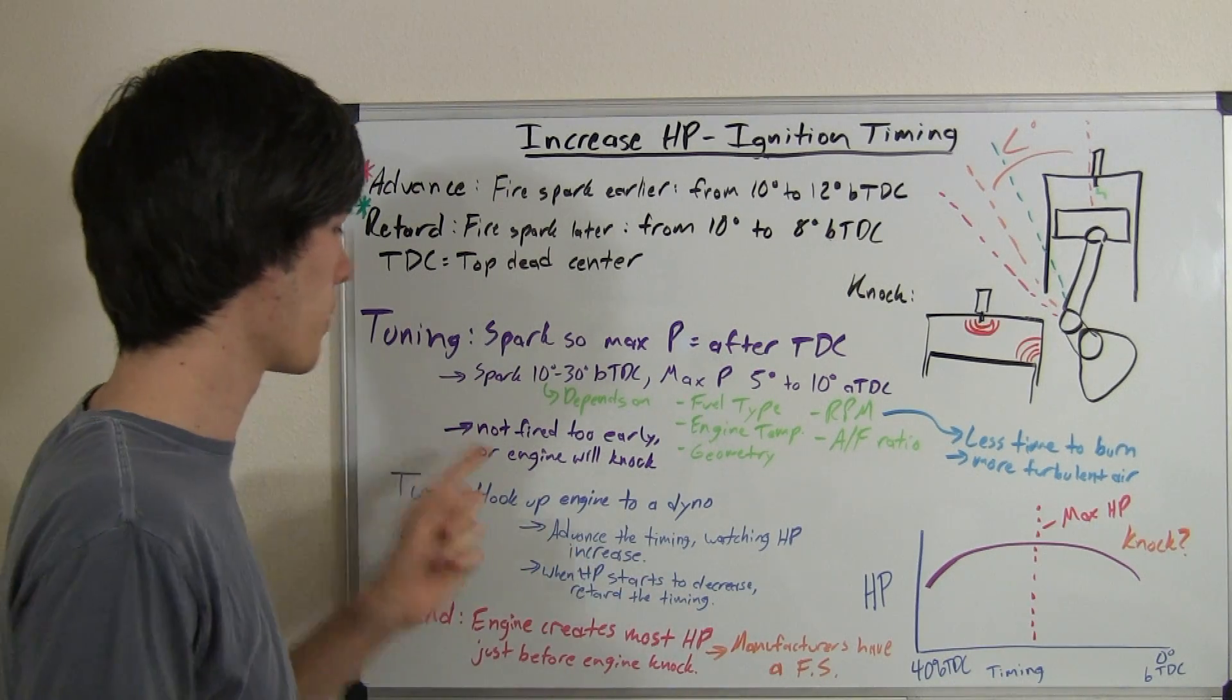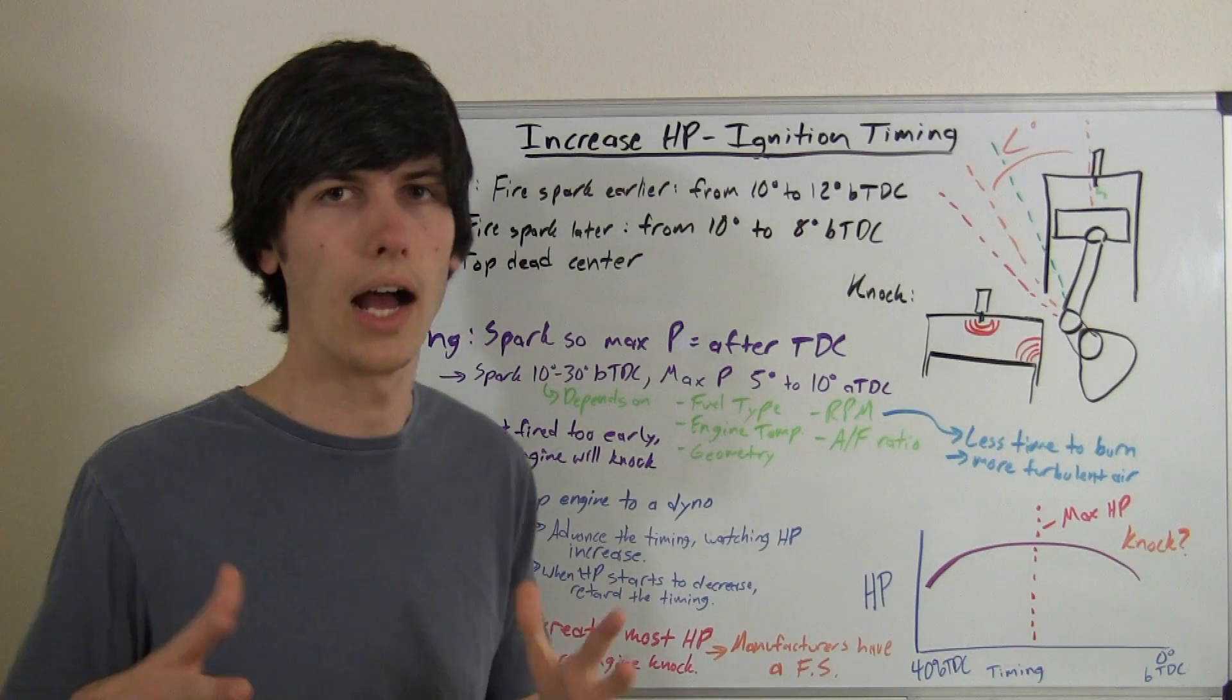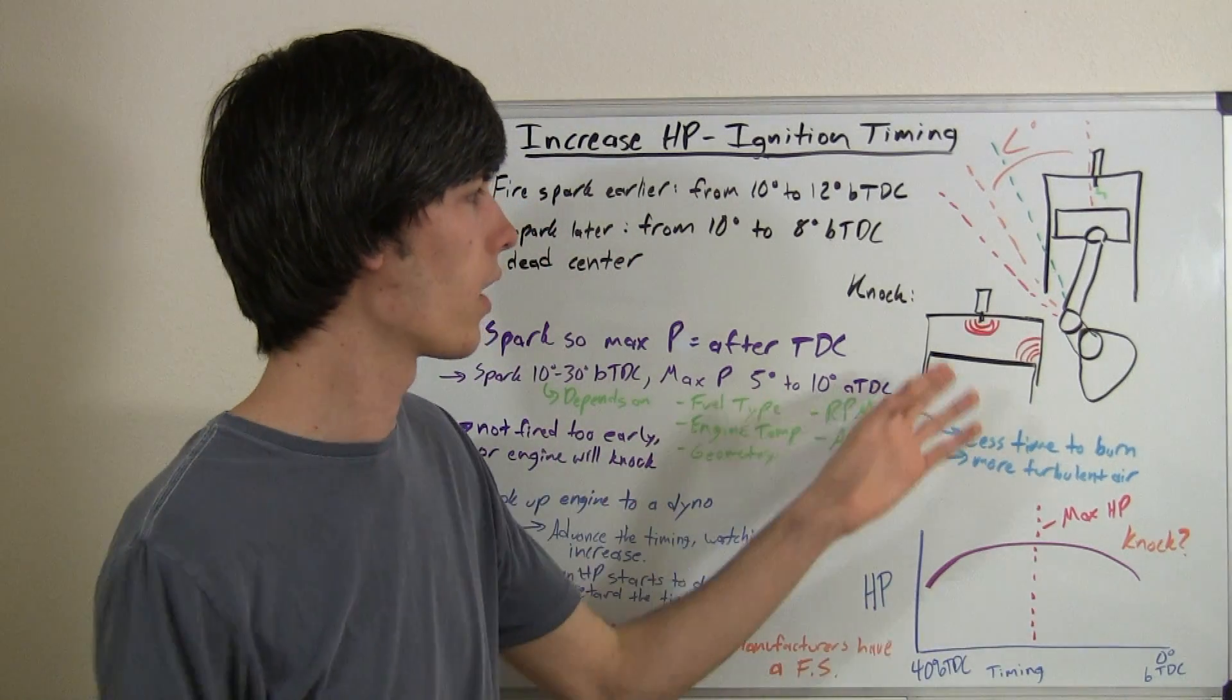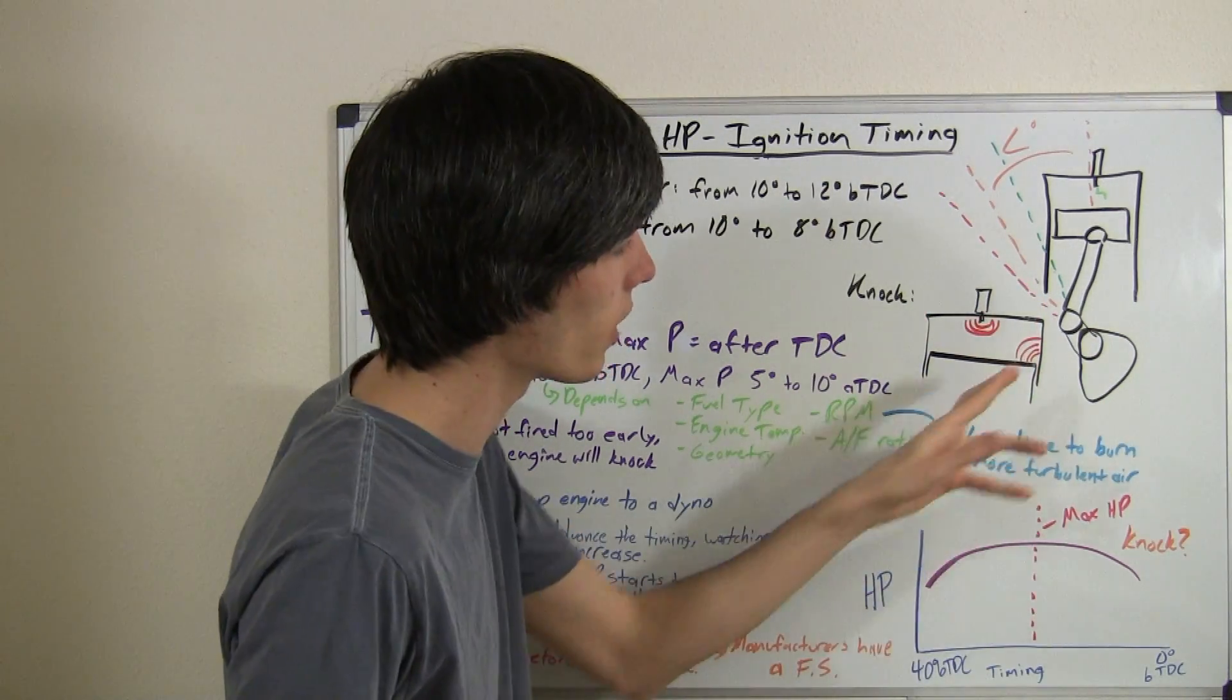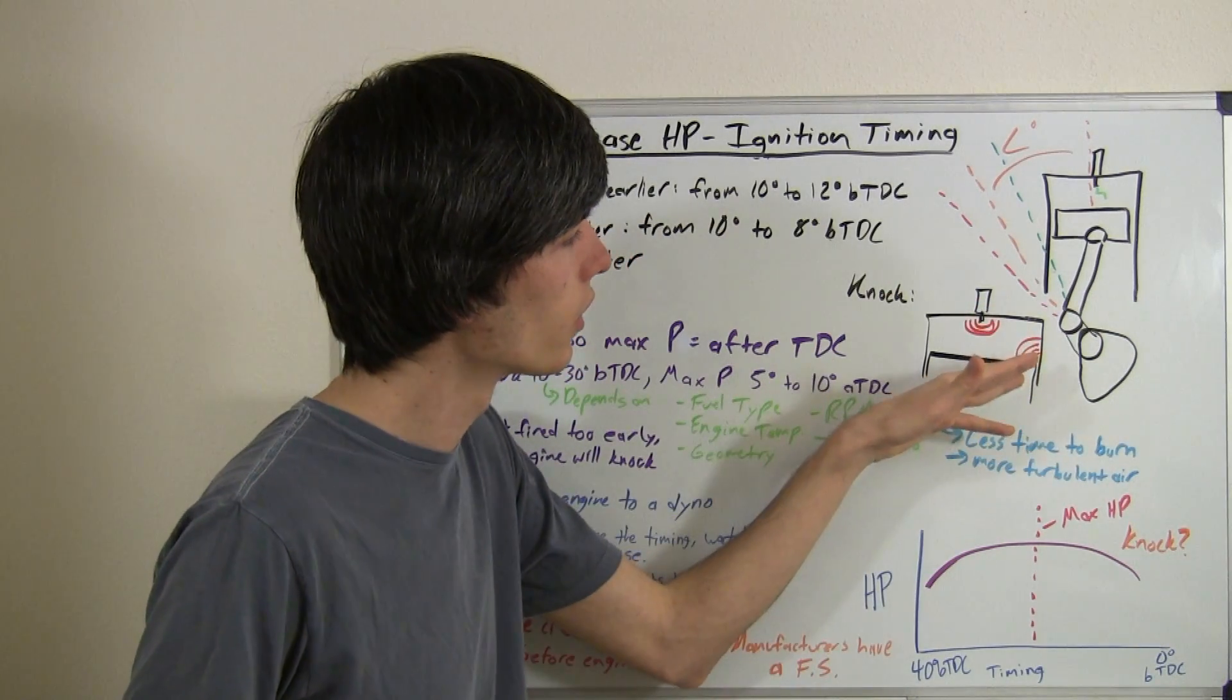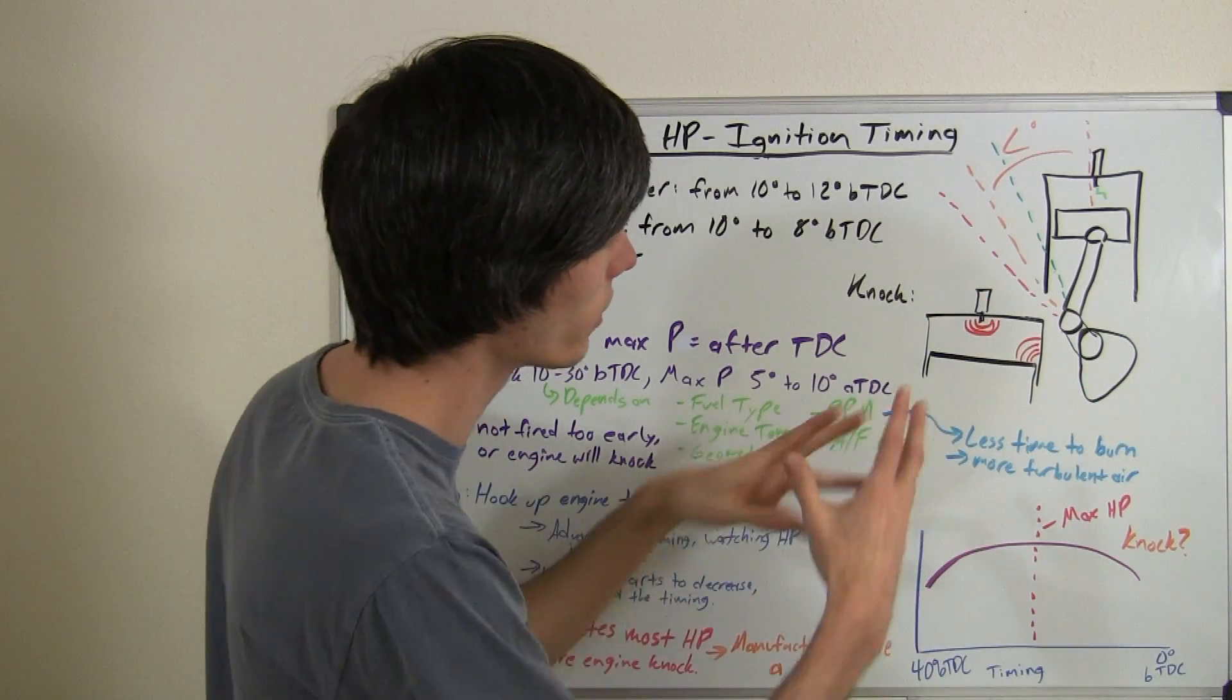But one thing you do want to make sure is that you're not firing too early so that the engine knocks. So knock is basically an irregular detonation where you fire your spark and your flame front has started, but there's a pocket somewhere else that's heated up enough where the temperature of the air-fuel mixture is hot enough for it to combust. So what it does is you've got these two flame fronts, and they're kind of battling each other.